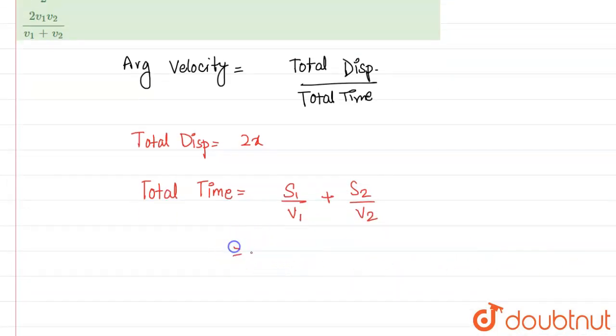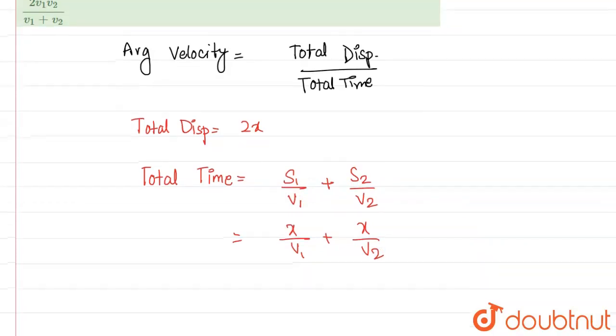So basically now what we'll do? S1 is x and v1 is v1. S2 is x and v2 is v2.